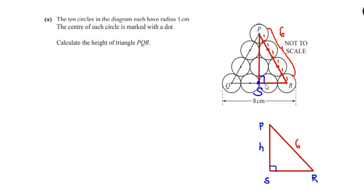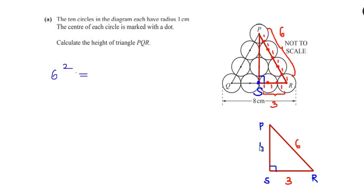The same thing applies for the base SR. From point S to the center of the circle is 1 centimeter, then 1 centimeter more, and 1 centimeter from that point to point R. So the total base becomes 1 plus 1 plus 1, which is 3. Let us mark it as 3. Now using the Pythagorean theorem, the hypotenuse squared equals the sum of the squares of the legs.